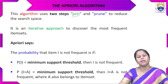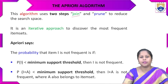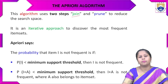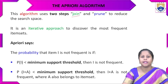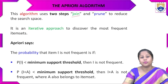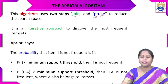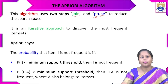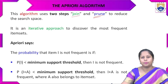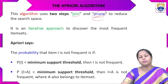Joining means combining frequent item sets together — from one item sets we form two item sets by combining items that occur together. Pruning means removing those item sets that are not occurring together frequently — items that have no probability of occurring together in the future are removed from the dataset.